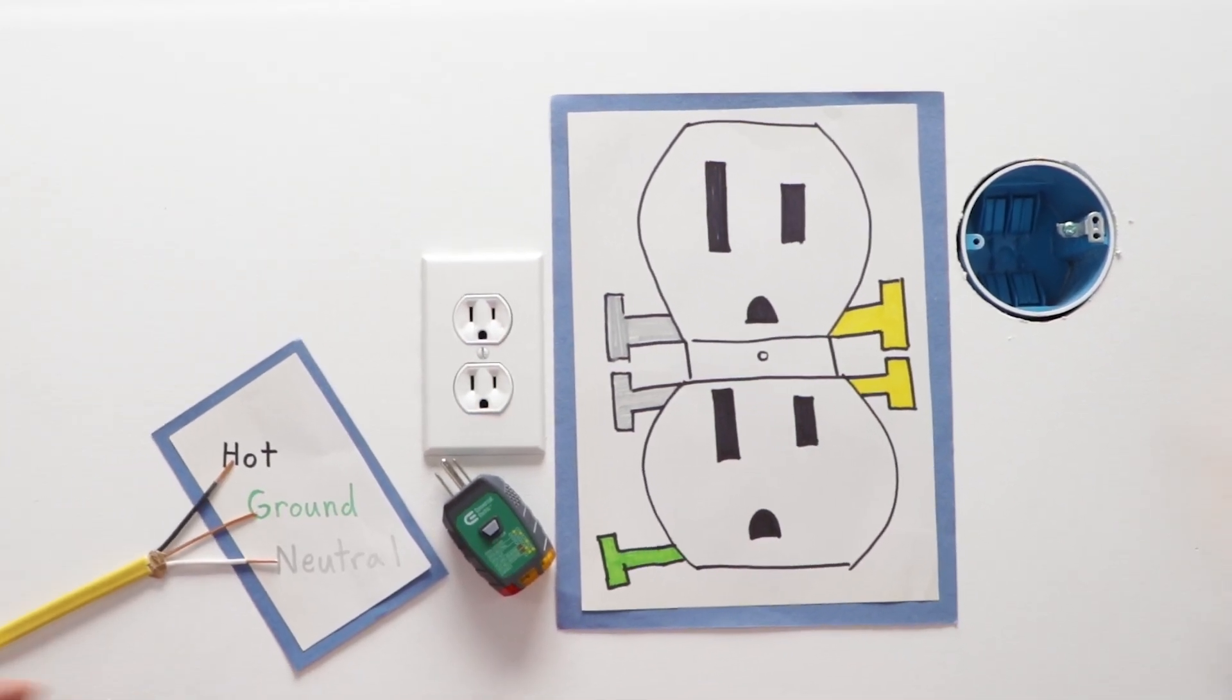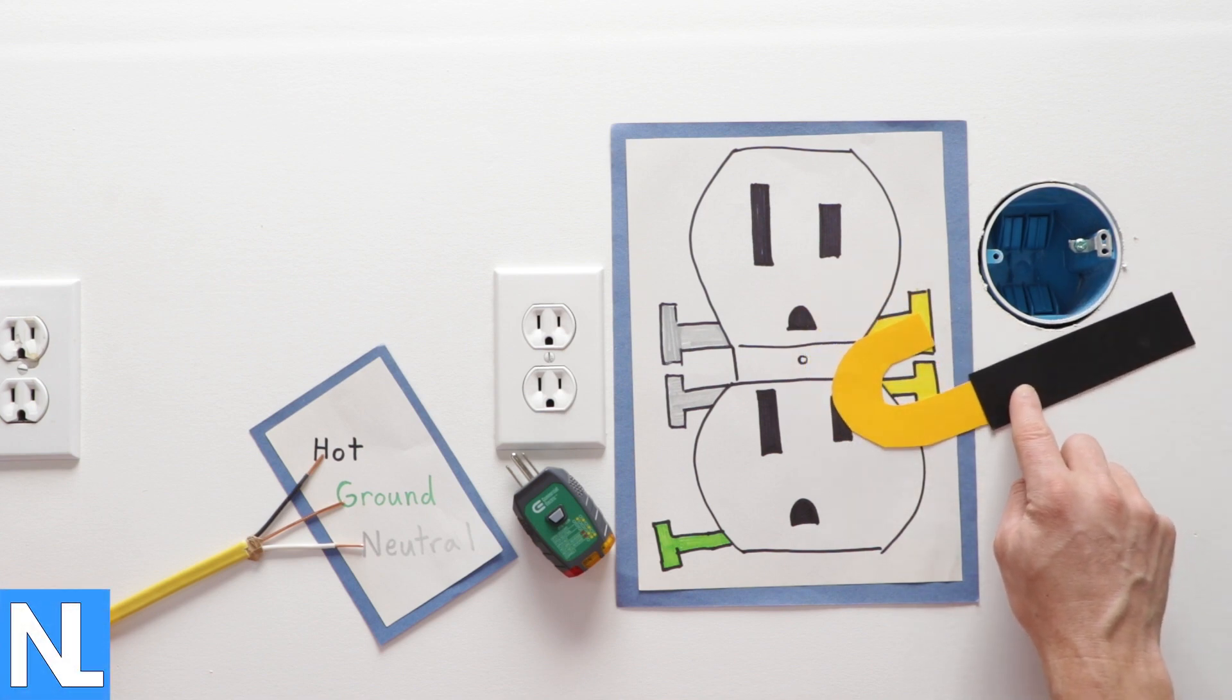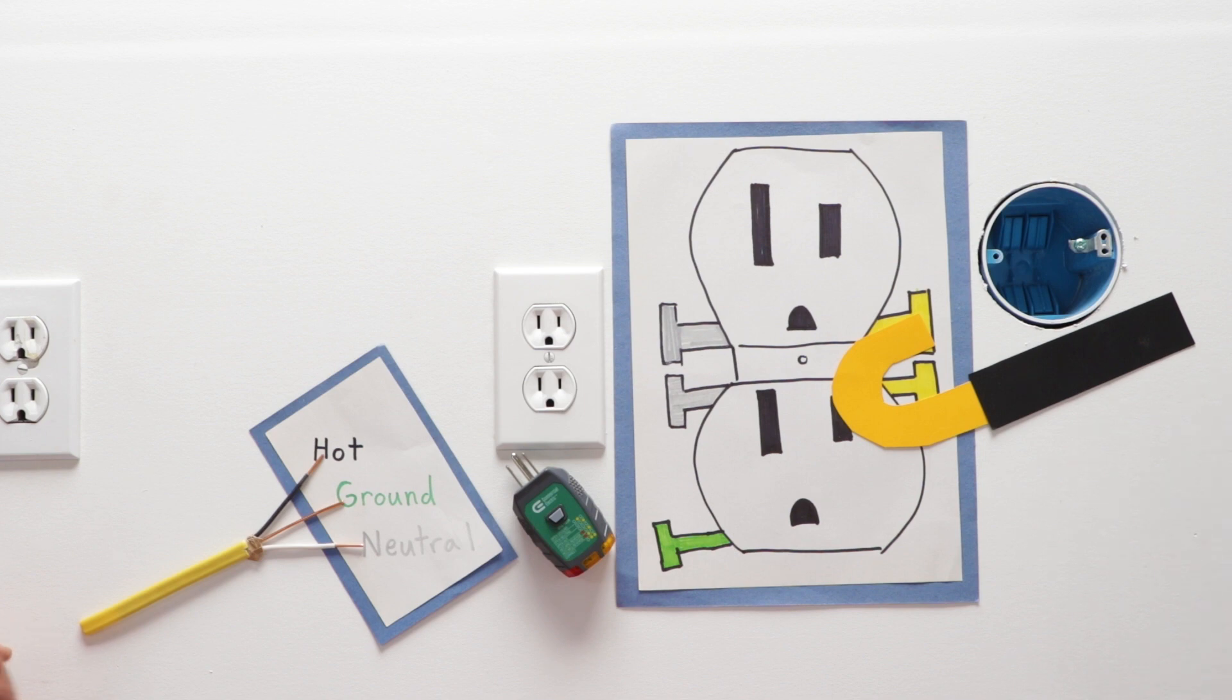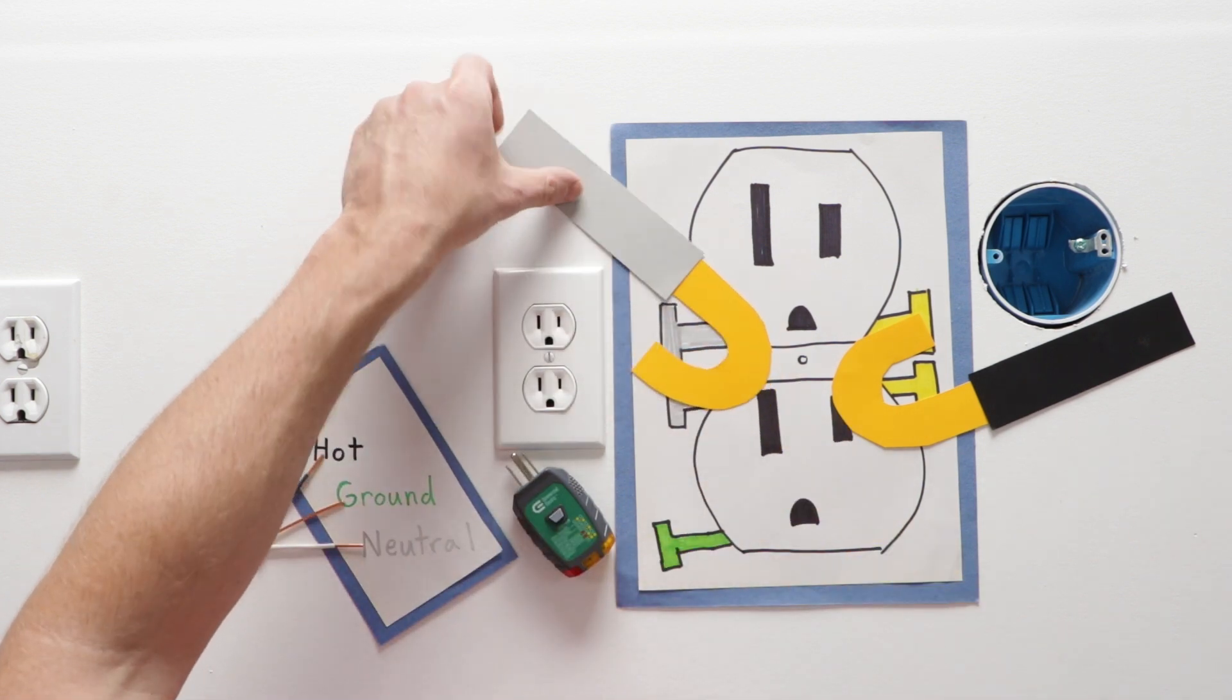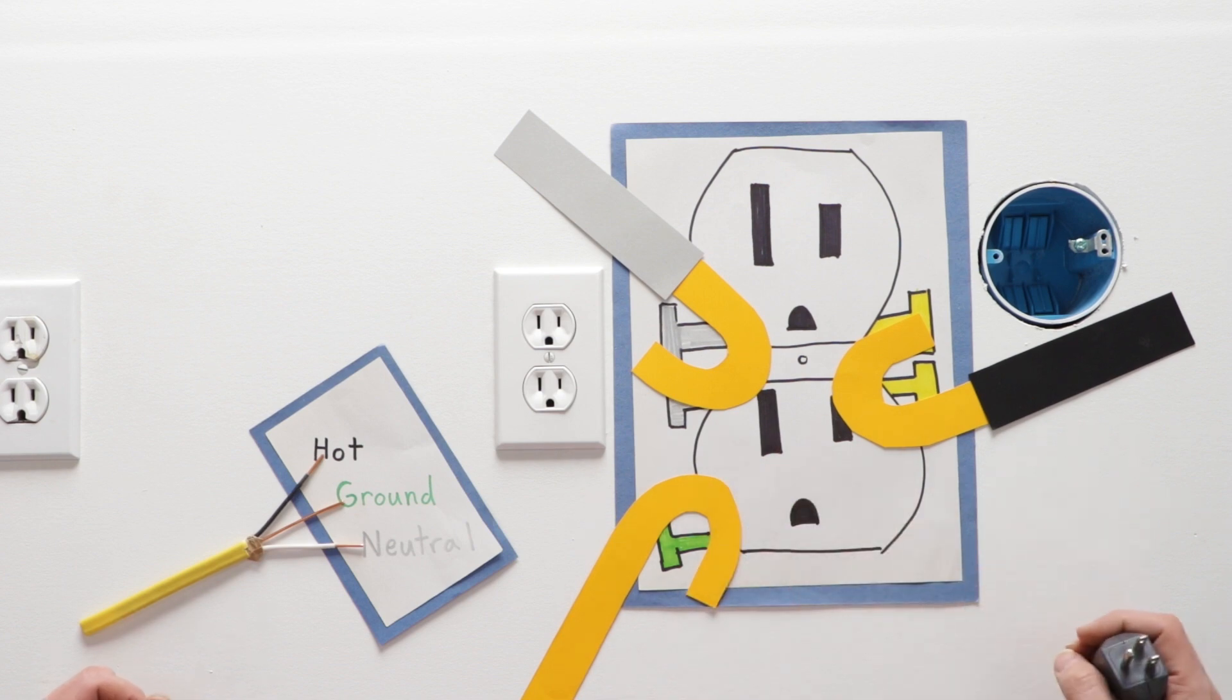As you probably know, the brass screw is for your black wire or your hot wire. The silver is for your white wire or your neutral. The green is for your bare copper or ground. This is how your receptacle should be wired.